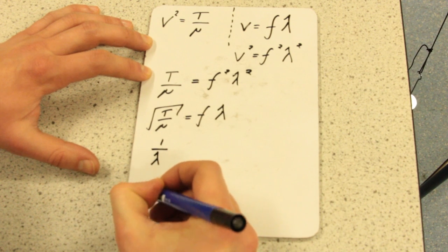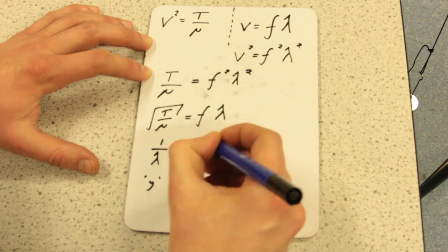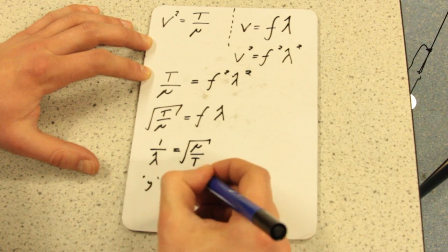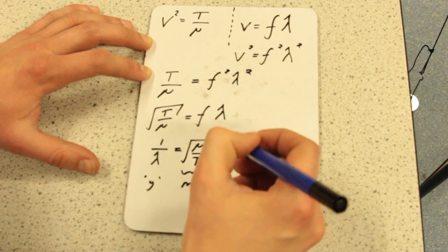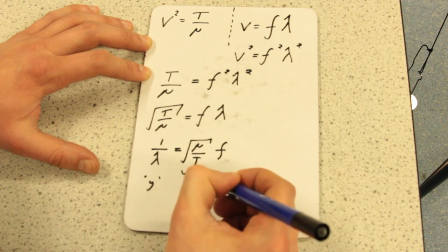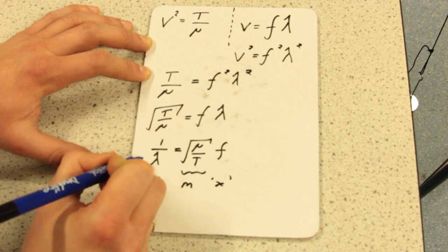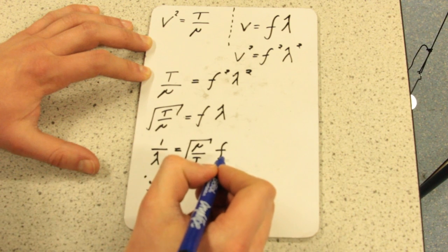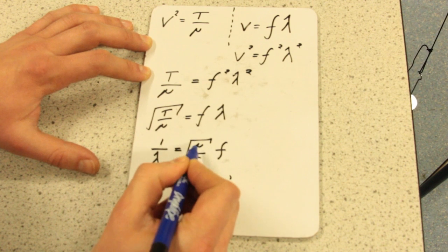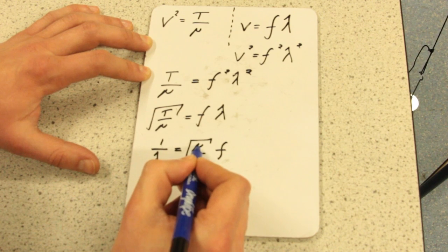This is now our y term equals... move this over to the other side. Be careful with our math. This is our gradient. And finally, our f stays roughly where it is as our x term. So we're plotting y against x. In this case, 1 over λ against frequency. We'll get this as our gradient to our graph. And by doing a quick measurement of what tension is on our string, we can find out the mass per unit length.